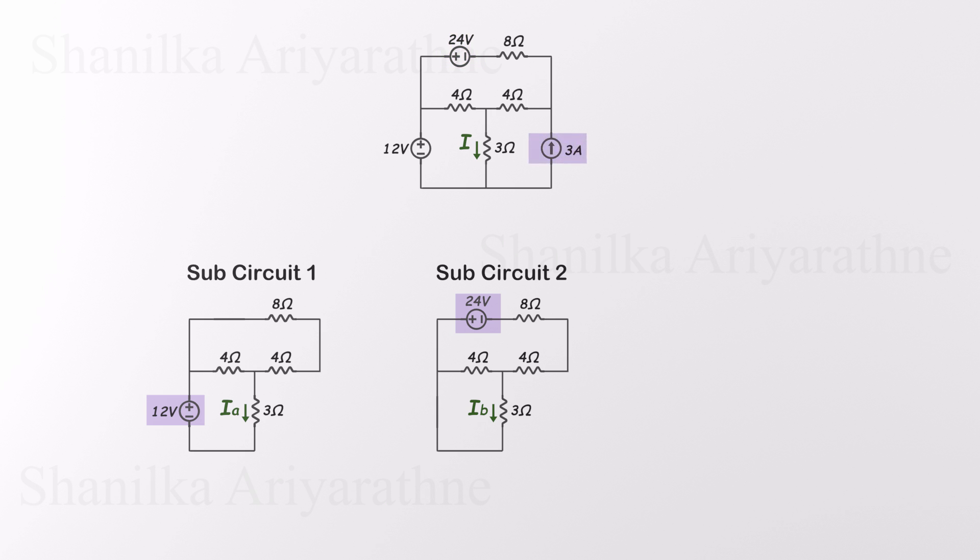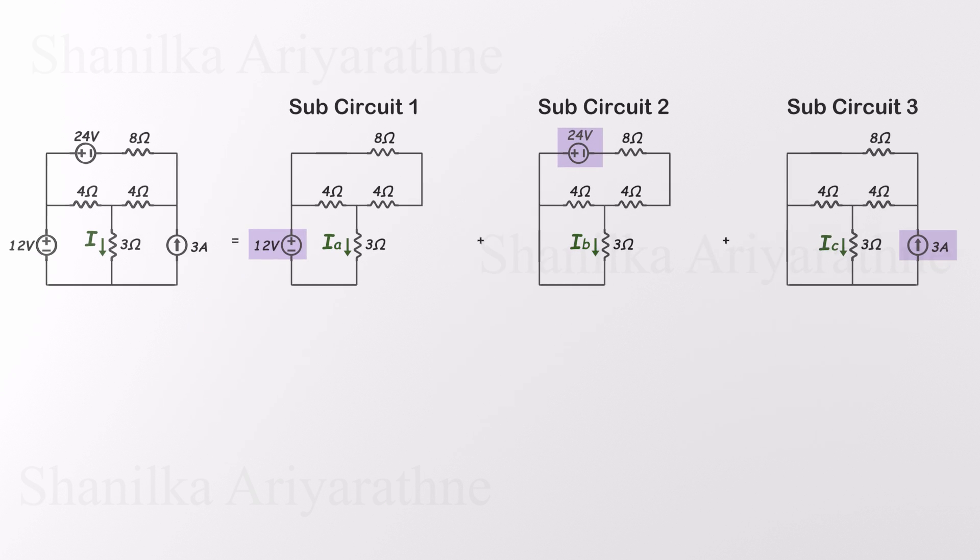Finally, let's activate the current source and deactivate the two voltage sources. That means we replace both voltage sources with short circuits. This gives us our third sub-circuit, which now contains only the current source. We'll call the current through the 3-ohm resistor in this setup IC. Now we've broken the original circuit into three simpler sub-circuits, each with just one independent source. According to the superposition theorem, the total current I through the resistor is simply the sum of the three: I equals IA plus IB plus IC.